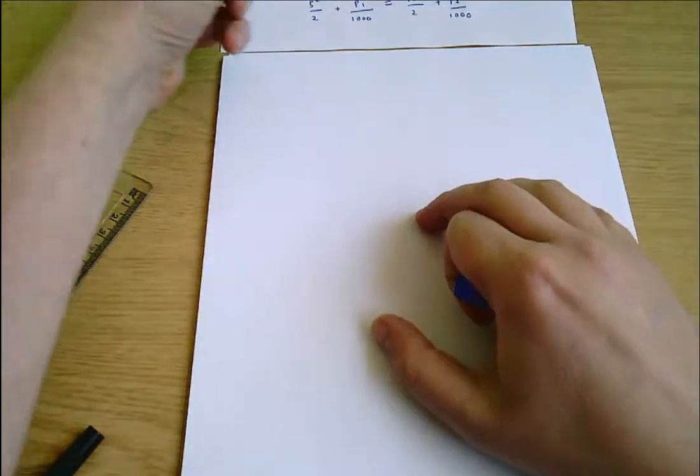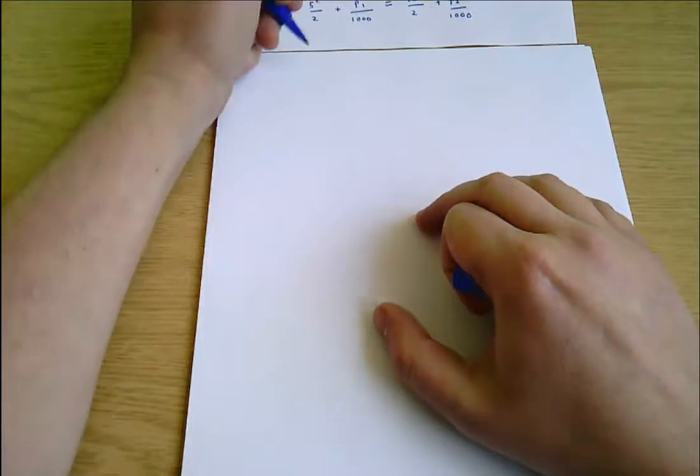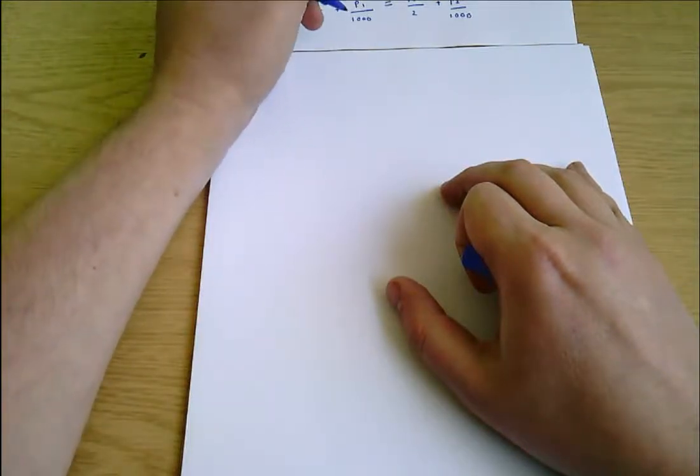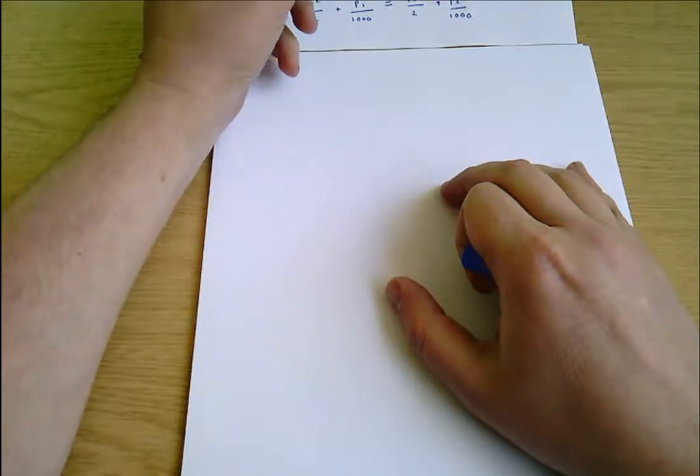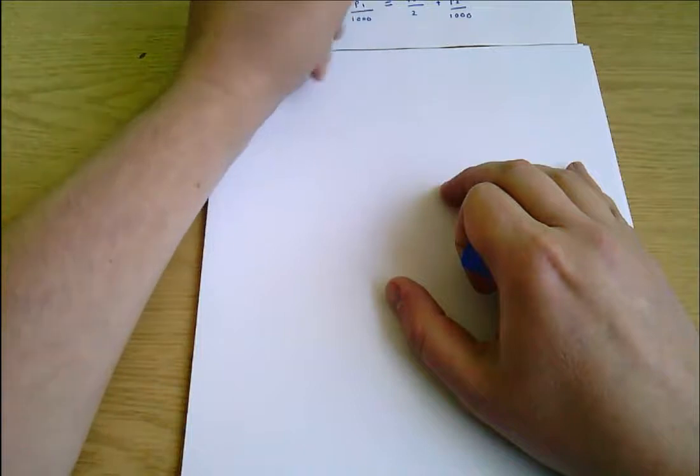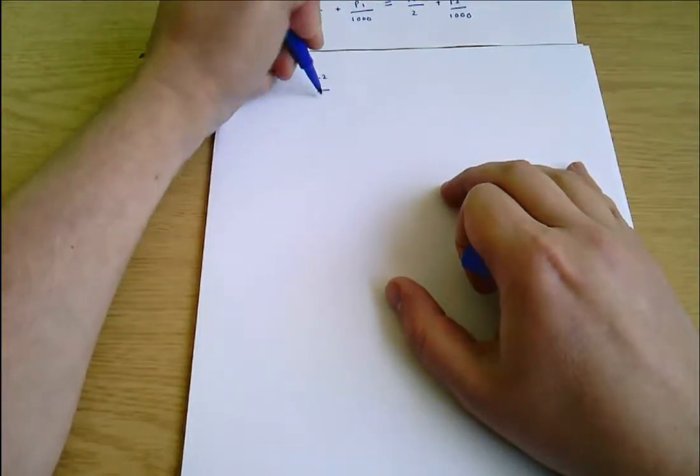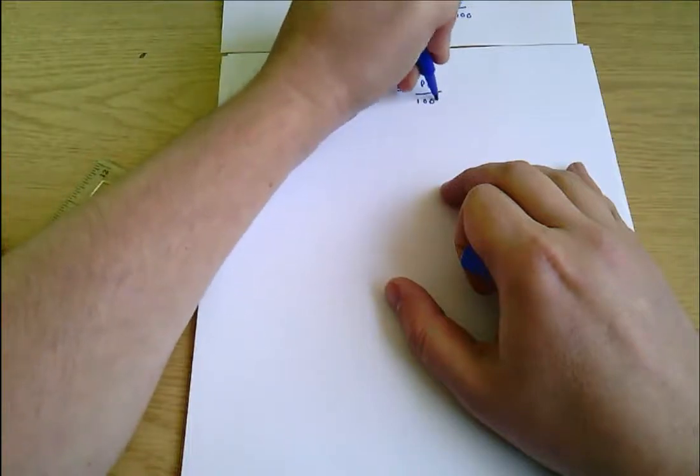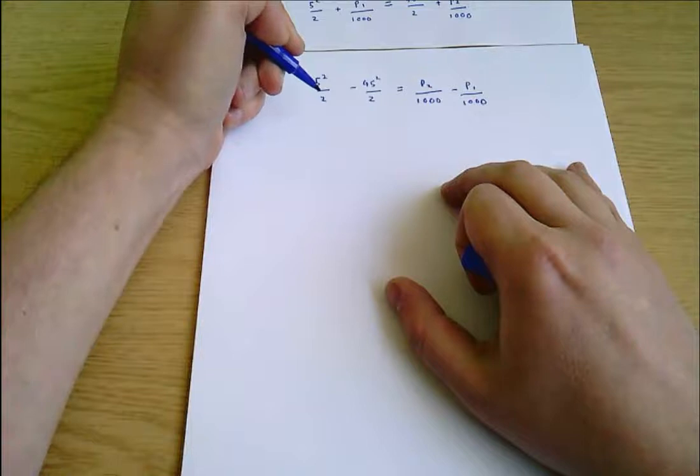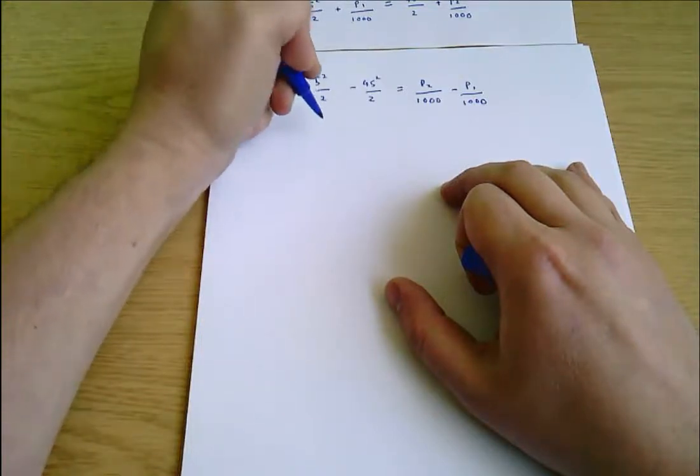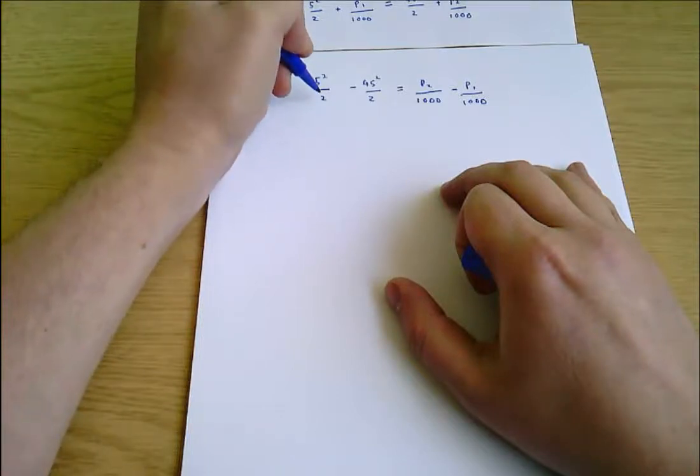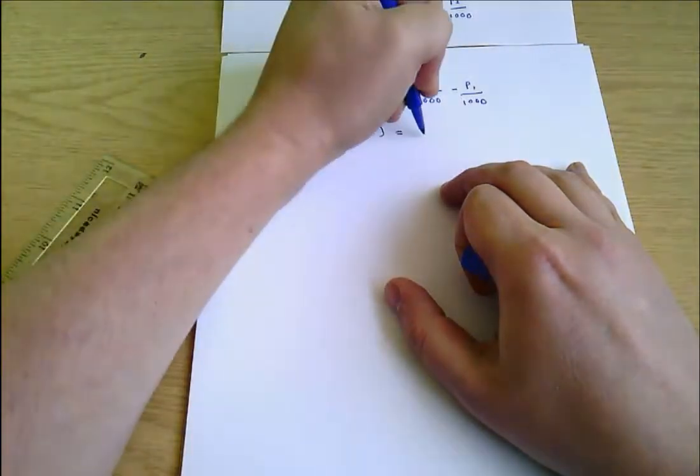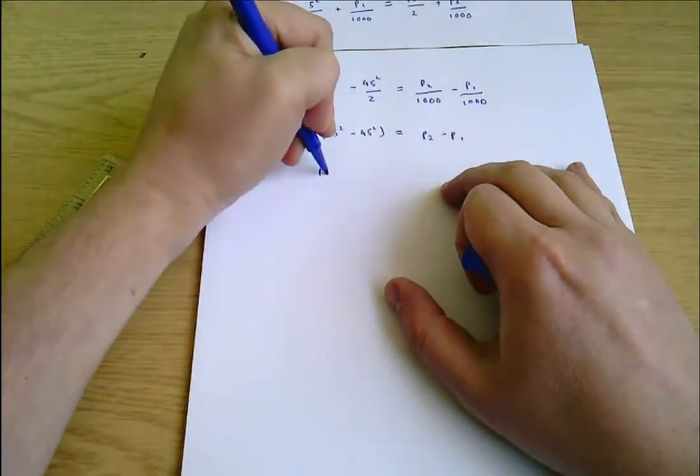And all of that means rearranging what we're asked for is the pressure difference P2 minus P1. So if I subtract this term with P1 from both sides I'll be left and move the other term to the other side. I'll be left with 5 squared on 2 minus 45 squared on 2 equals P2 on 1000 minus P1 on 1000. And if I multiply everything there by 1000, then 1000 and 2 will cancel each other out. So I'll have 500 times 5 squared minus 45 squared equals P2 minus P1.